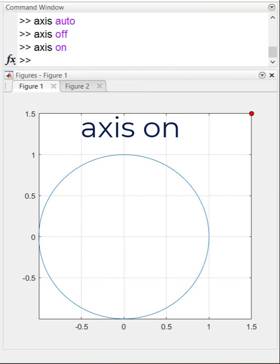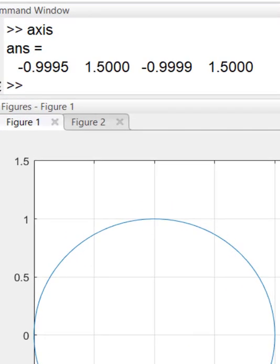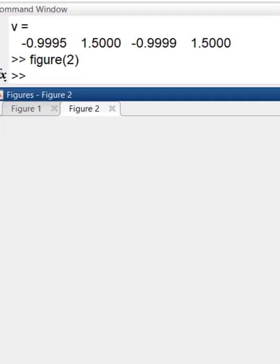You can turn axis off or on. If I type axis, MATLAB will show me the current axis limits. I can save it to a variable and create a new figure with these limits.